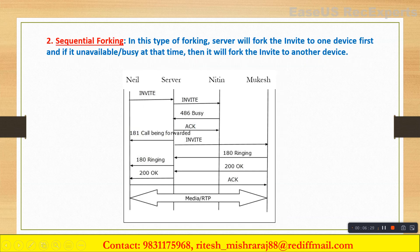In case of sequential forking, the invite is forwarded to Nitin first as the first called party. If Nitin is busy, he sends a 486 Busy message to the server, the server acknowledges it, and then the same invite is forwarded to the second called party, Mukesh. If Mukesh is available, he will send 180 Ringing followed by 200 OK, and the media will be established. This is sequential forking.